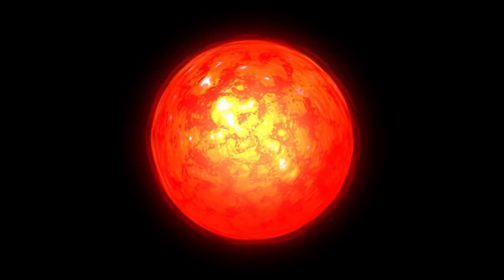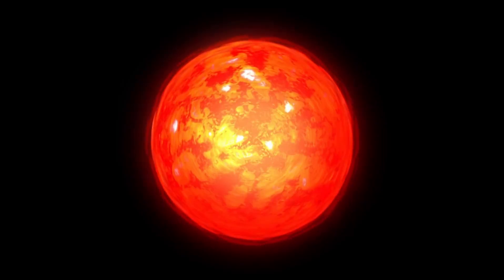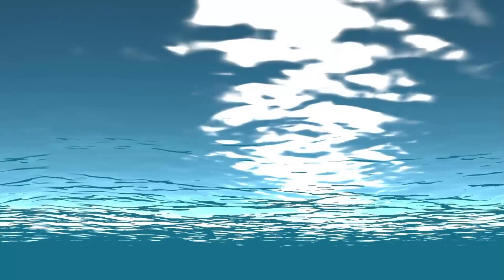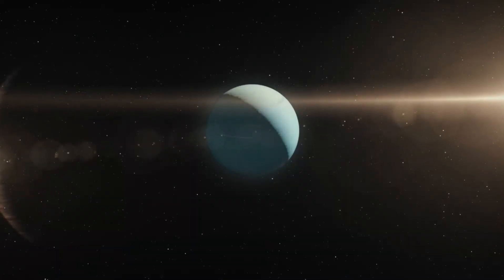However, the planet is tidally locked to its star because of how near it circles. This indicates that one side is perpetually exposed to sunshine while the other is perpetually dark. As a result, a planet is formed with two drastically different environments, one perpetually in the dark and the other facing the Sun. It is comparable to how the Moon constantly faces Earth on the same side.